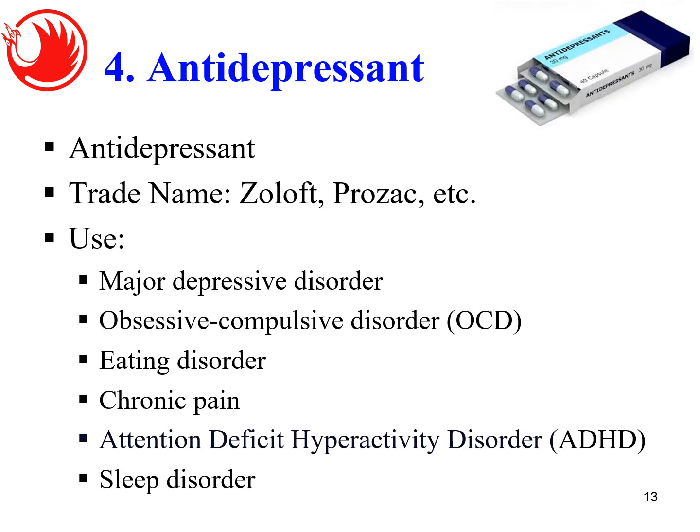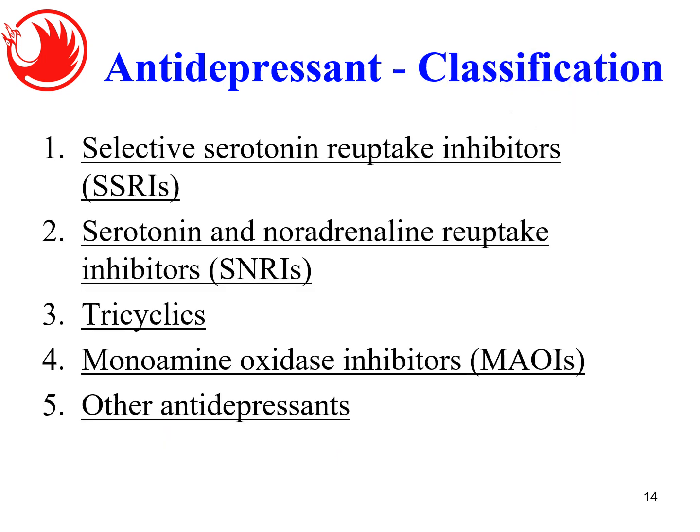Moving on to another class of drugs: anti-depressants. Anti-depressants are used to treat conditions like depression, OCD, eating disorders, chronic pain due to the mind, ADHD, and even some sleep disorders. A well-known trade name is Prozac. There are five classes of anti-depressant drugs: number one, selective serotonin reuptake inhibitors (SSRI); number two, serotonin and noradrenaline reuptake inhibitors (SNRI); number three, tricyclics; number four, monoamine oxidase inhibitors (MAOIs); and number five, other anti-depressants.